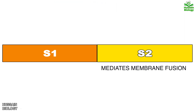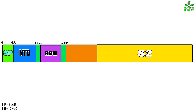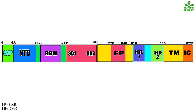The S1 has a signal peptide (SP) as shown in the diagram. Then we have the NTD region, followed by the RBD region — that's the receptor binding domain. Within this domain we have the RBM, the receptor binding motif. On the right we have the S2 region, which contains fusion peptides and several heptad repeats as shown in the diagram.